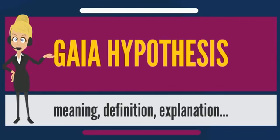A reduced version of the hypothesis has been called influential Gaia, which states the biota influence certain aspects of the abiotic world, for example temperature and atmosphere. It states the evolution of life and its environment may affect each other. An example is how the activity of photosynthetic bacteria during Precambrian times completely modified the earth's atmosphere to turn it aerobic, and as such supporting evolution of life, in particular eukaryotic life.